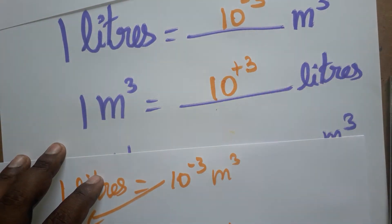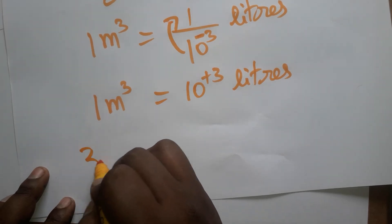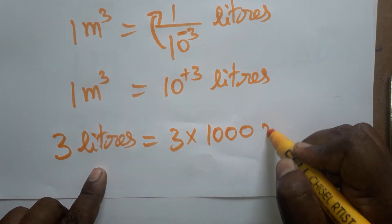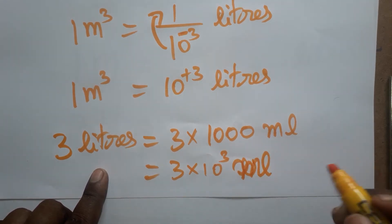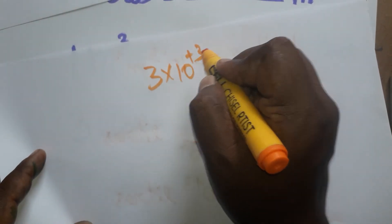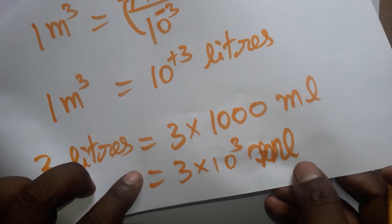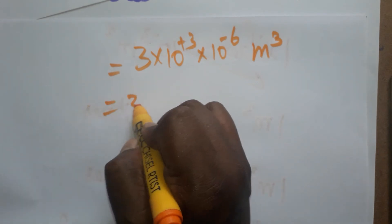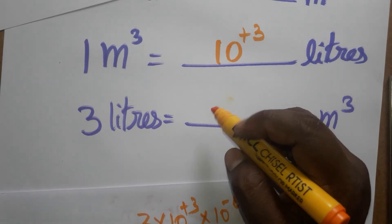Now solving the example: three liters is equal to dash meter cube. Three liters equals three into one thousand ml, which is three into ten power three ml. Since one ml equals one centimeter cube, and one centimeter cube equals ten power minus six meter cube, we get three into ten power plus three into ten power minus six meter cube. That gives three into ten power minus three meter cube.